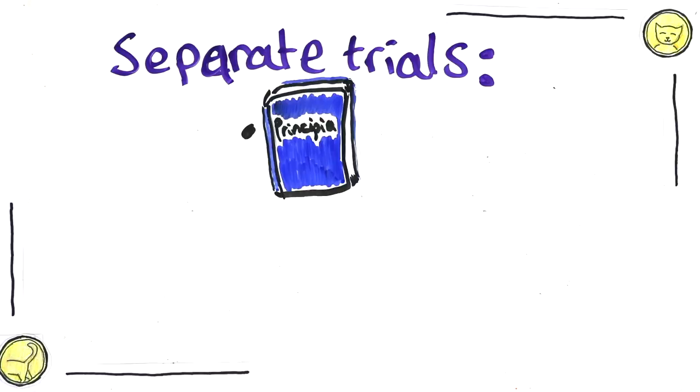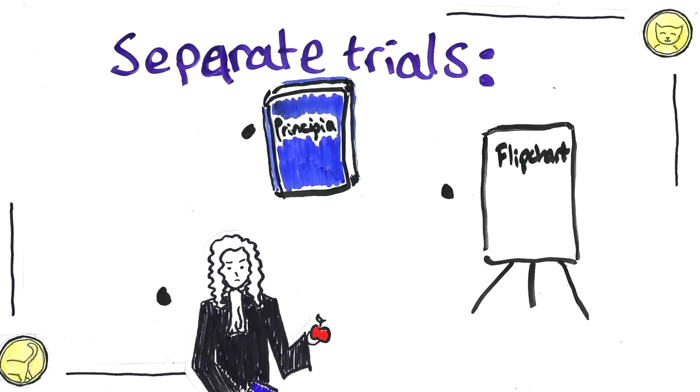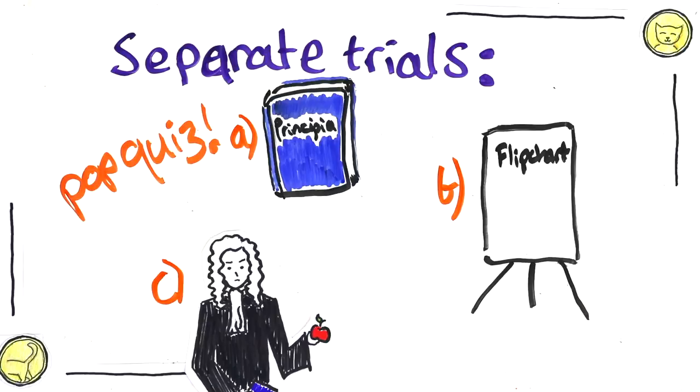First they tested giving out more textbooks, then providing flipcharts for the teachers, and then improving the teacher-to-student ratio. Before I tell you the results, I want you to take 10 seconds now to guess which of these you think was most effective. Which one would you have funded if you had to choose?